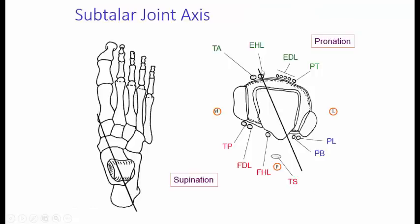As well as structures or tendons which cross the subtalar joint laterally will cause pronation, while structures which cross the subtalar joint medially will result in supination.